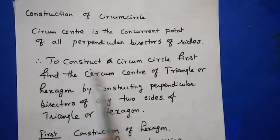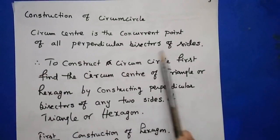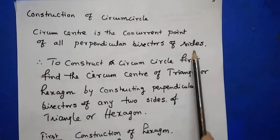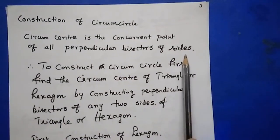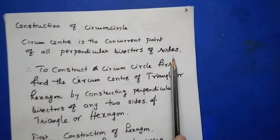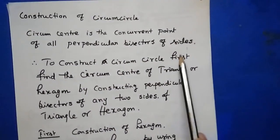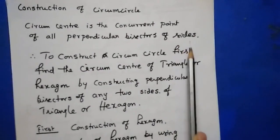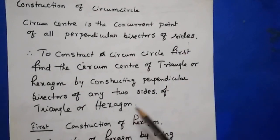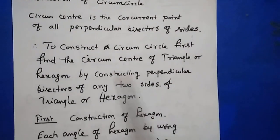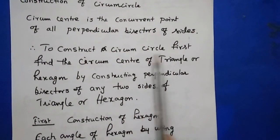For circumcircle, first you have to find the circumcenter. The circumcenter is the concurrent point of all the perpendicular bisectors of the sides of a triangle, hexagon, or pentagon. Here you will get a triangle or hexagon to construct.